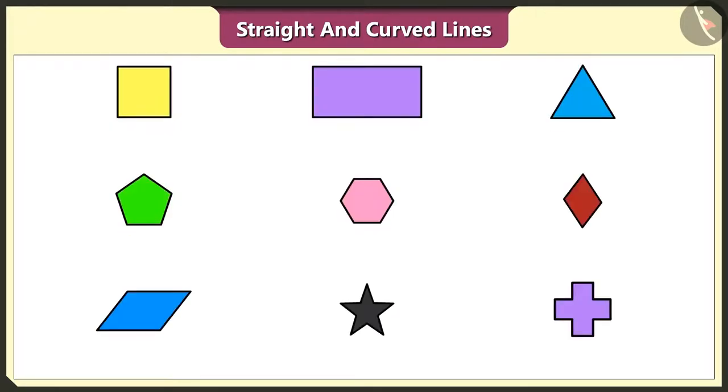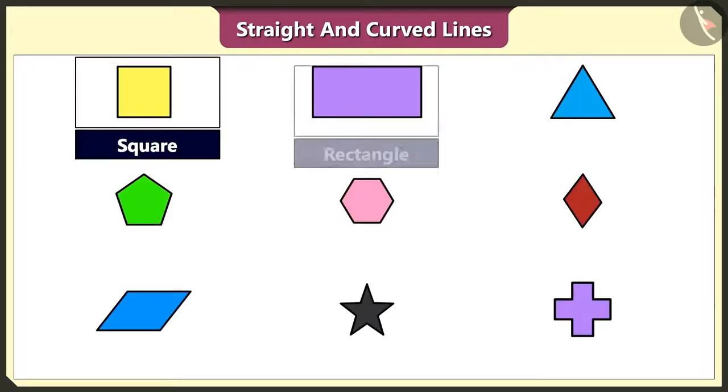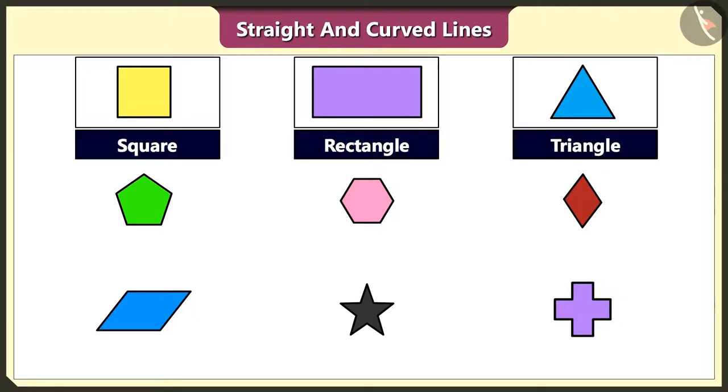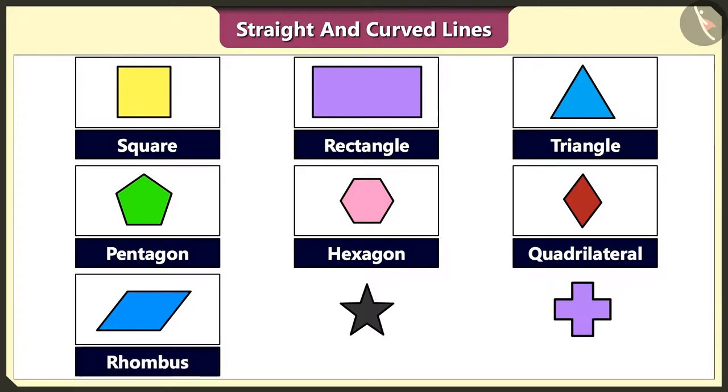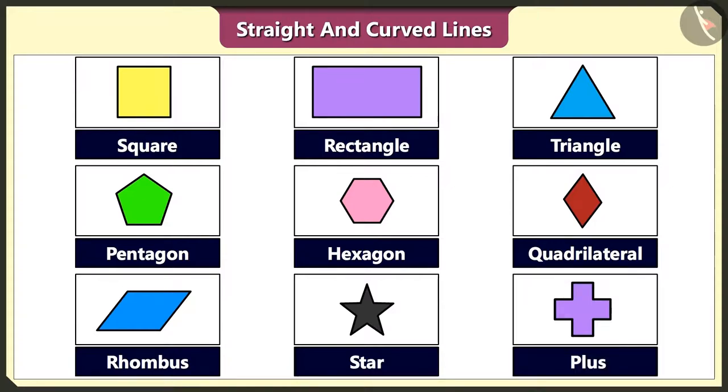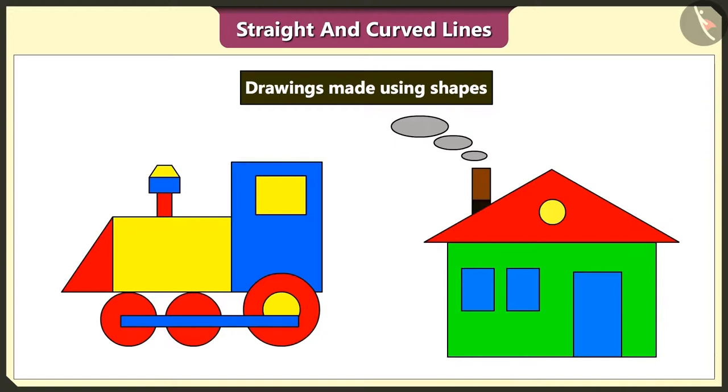Yes. And we can make square, rectangle, triangle, pentagon, hexagon, quadrilateral, rhombus, star and plus using straight lines. Yes. We can make several drawings easily using these shapes.